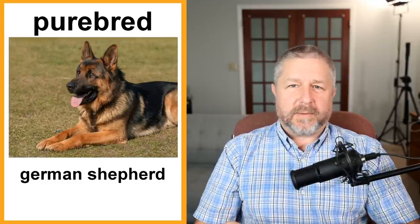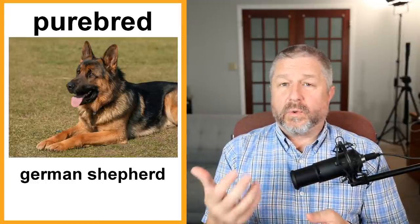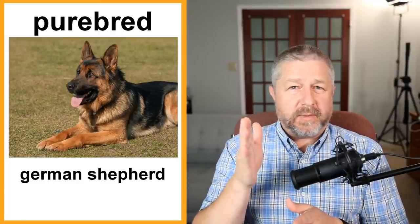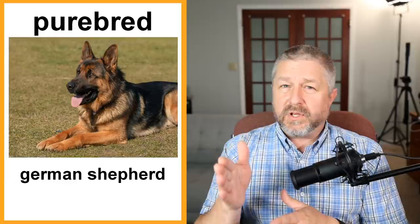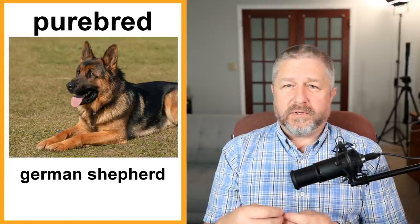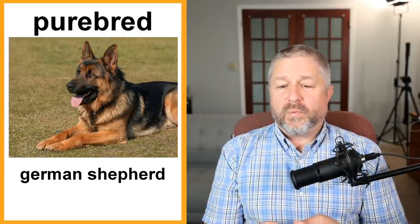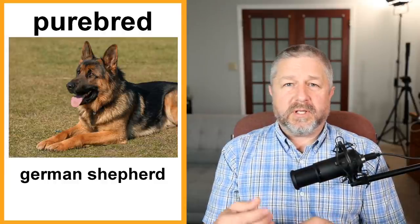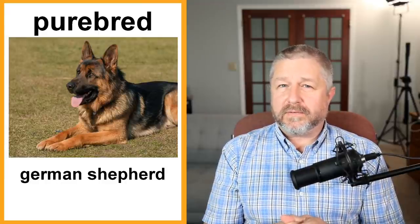And then we have purebred. A purebred animal is something like a German Shepherd. When I was young, the type of cow we had was a Holstein cow. Certain types of domesticated animals are purebreds — certain types of dogs like poodles, German Shepherds, or golden retrievers. Oscar is not a purebred — he is a mixture of three different kinds of dog — so he is definitely not a purebred dog at all.